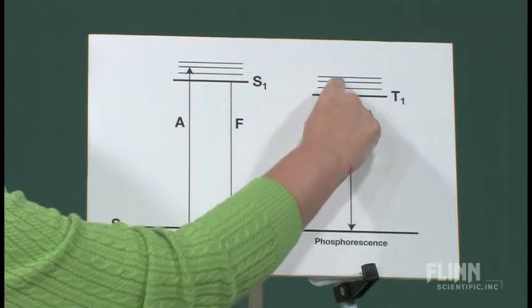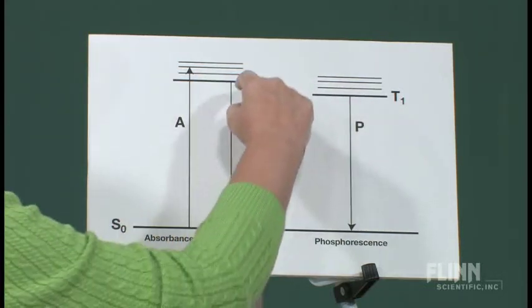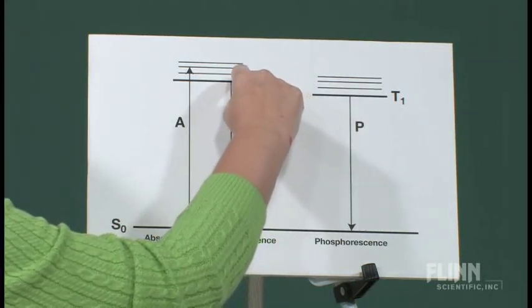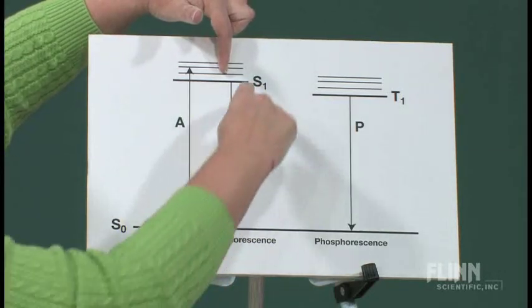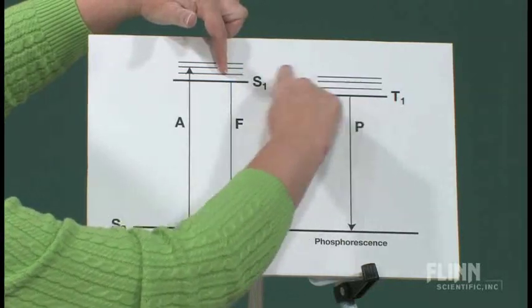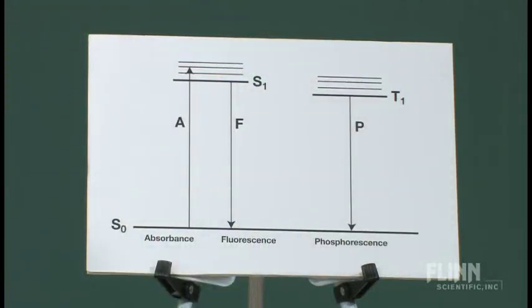You can actually get a phenomenon where the electron goes from a higher vibrational energy level here in S1 across—in management terms that would be a horizontal or a lateral move rather than a vertical move. We have a horizontal move to one of these energy levels.